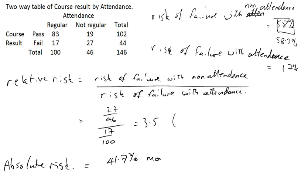So you are 41.7 percent more. That's a 41.7 percent chance of failure with non-attendance over attendance.